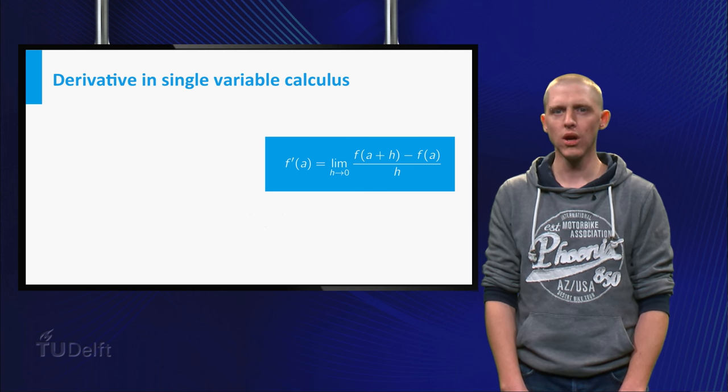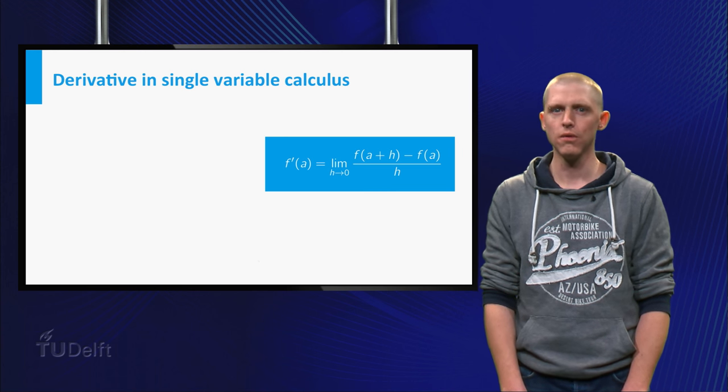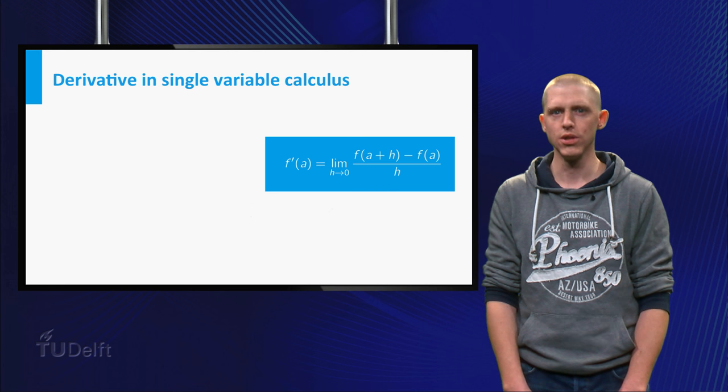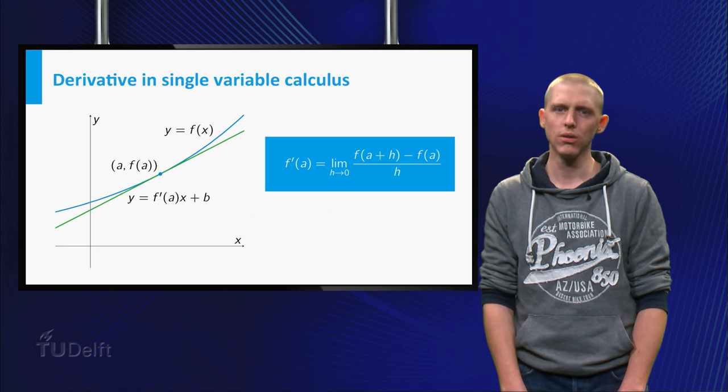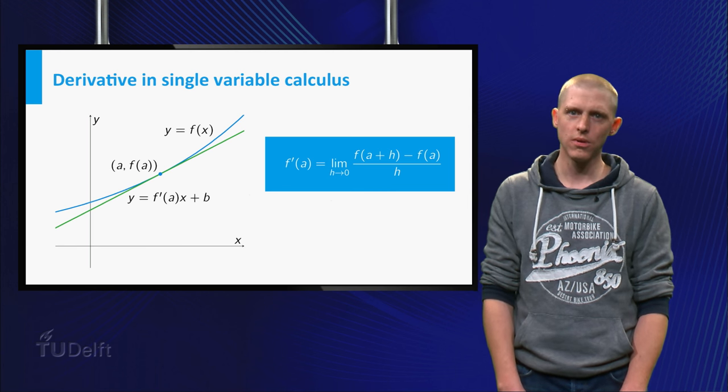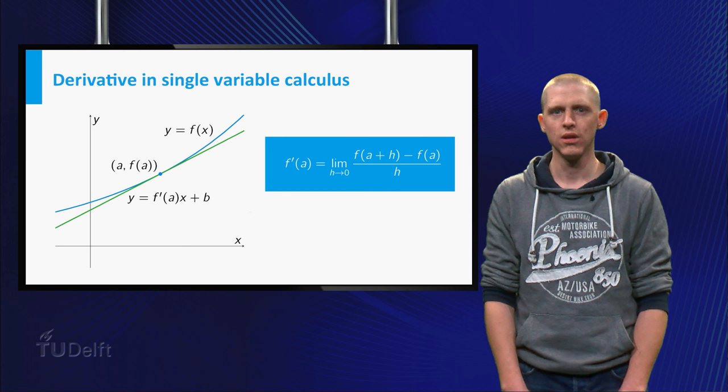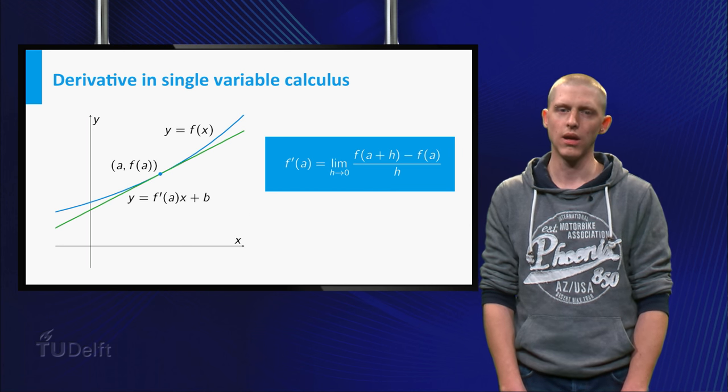The quantity f'(a) equals the rate of change of the function f when x increases starting at a. Geometrically, f'(a) equals the slope of the green tangent line to the graph of the function f at the point (a, f(a)).